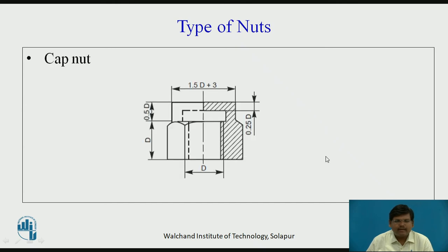Next we have cap nut. Cap nut is again a type of hexagonal nut where there is a cap-like or dome-like structure at the top. Cap nut and dome nut are similar. This type of nut is used in connecting steam pipes or locomotives, and it also prevents corrosion or leakage where these nuts are used.